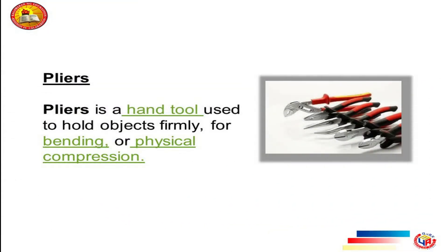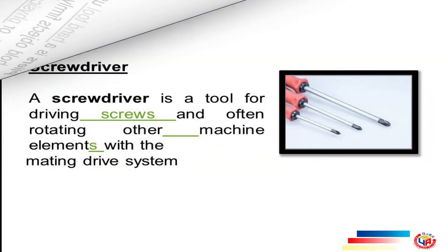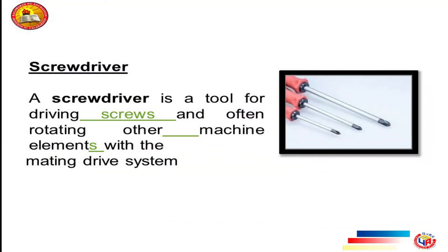Pliers: Pliers is a hand tool used to hold objects firmly for bending or physical compression. Screwdriver: A screwdriver is a tool for driving screws and often rotating other machine elements with the mating drive system.